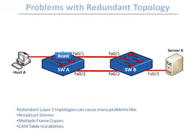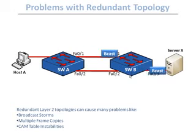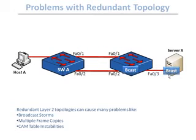When switch A received a copy of that broadcast, it had to do exactly what every switch does — send it through all ports except the originating one. So eventually this broadcast goes back to switch B, and with every turn, with every loop, switch B has to send another copy of that frame to server X.